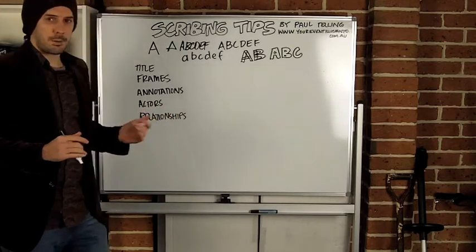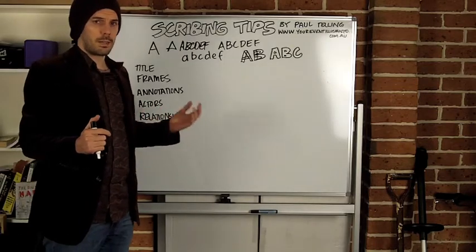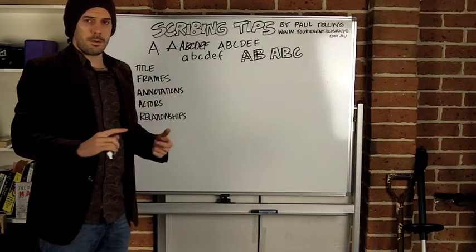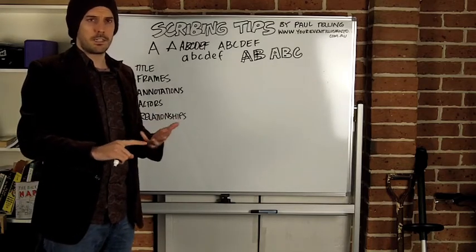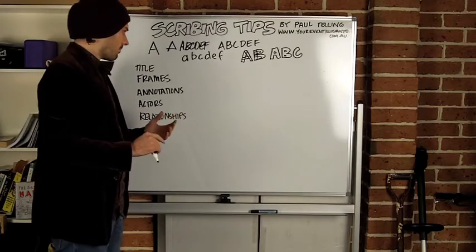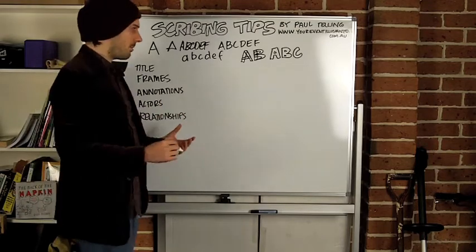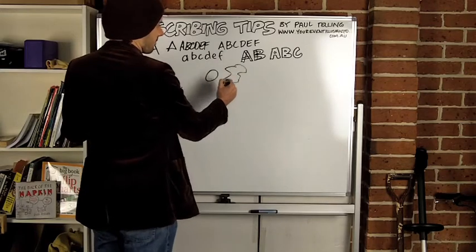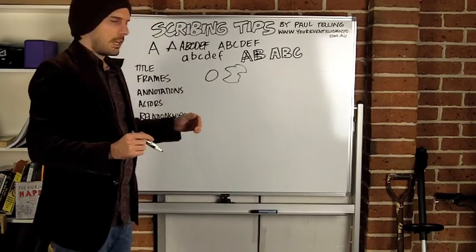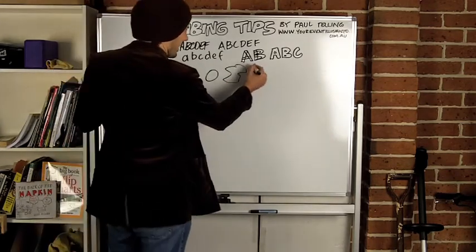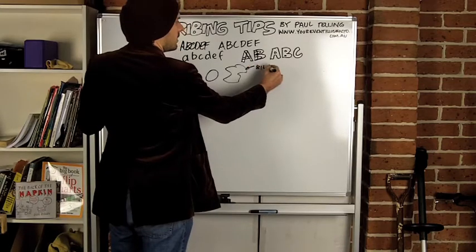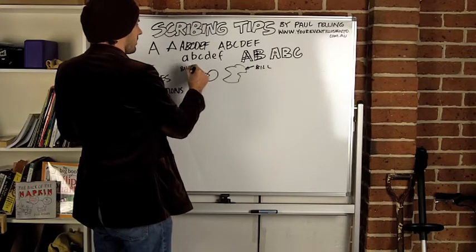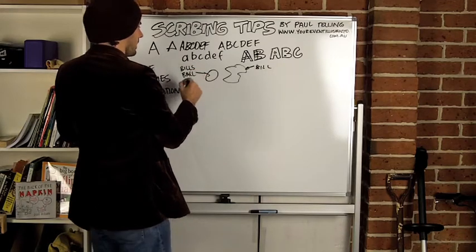Actors, so actors are the players in the model. The players in what it is you are modeling. These can be people, these can be objects, they can be systems and they can be drawn any way. I mean an actor can simply be a circle or it could be just a block. And then once you annotate that you can say that's Bill and that's Bill's ball. That's where you start to see the clarity.